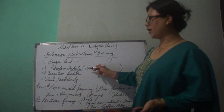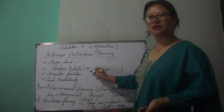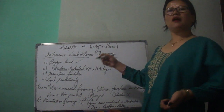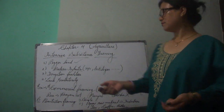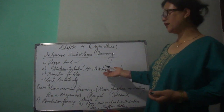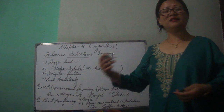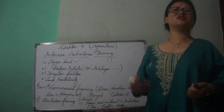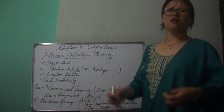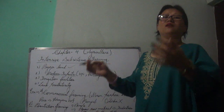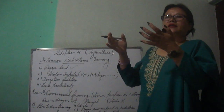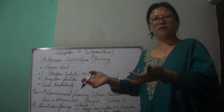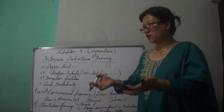These inputs include HYV seeds — high yielding variety seeds — as well as fertilizers, insecticides, and pesticides. Whatever inputs they can use to get the maximum benefit, they do use.